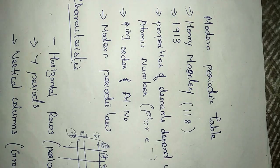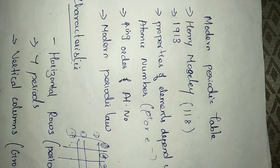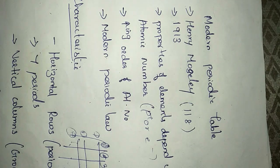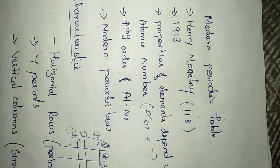Good morning students. Today we are going to discuss about the modern periodic table. Last class we started the classification of the periodic table and we studied several classifications. The first one is Dobereiner's triads — elements were grouped into three groups, each group with three elements having the same physical and chemical properties.